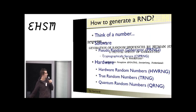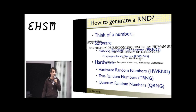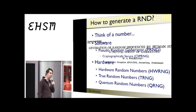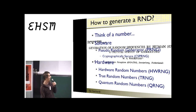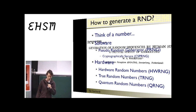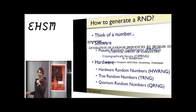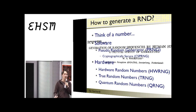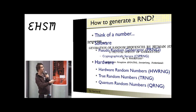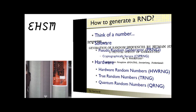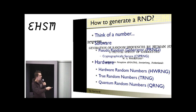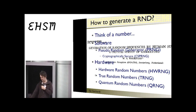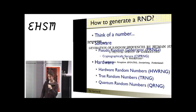There's an entirely different class: hardware random number generators. A very common approach uses mouse movements and keystrokes as a seed for a pseudo-random number generator. Then there are true random number generators that use a physical process considered truly random. I'll talk mostly about quantum random numbers today — what they are and how they work.